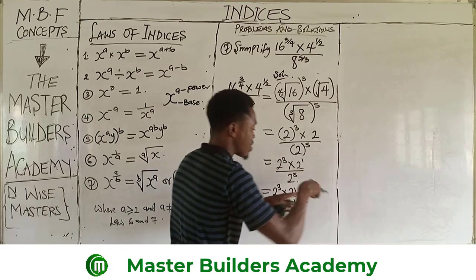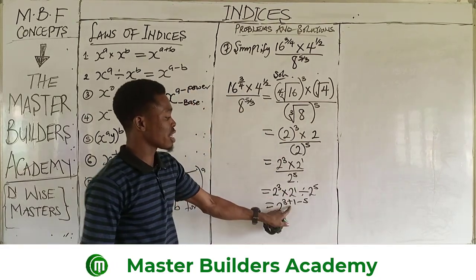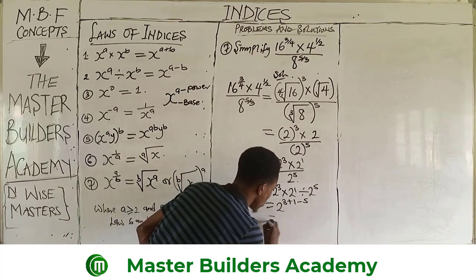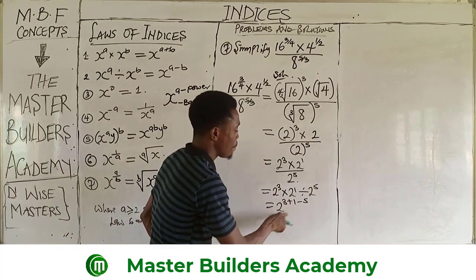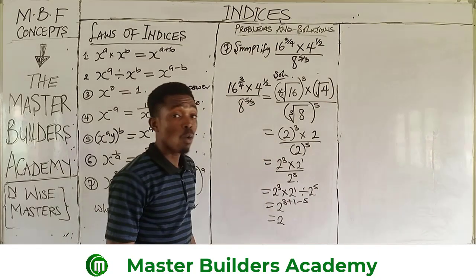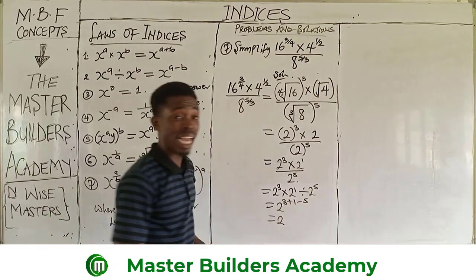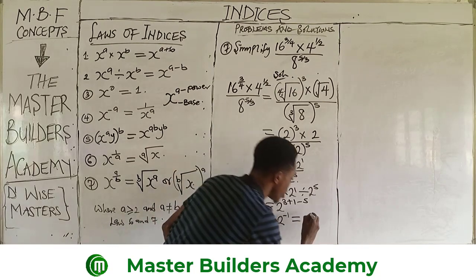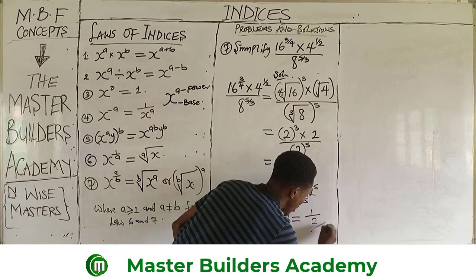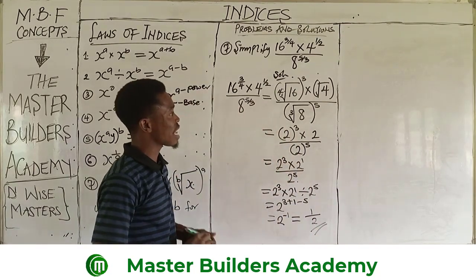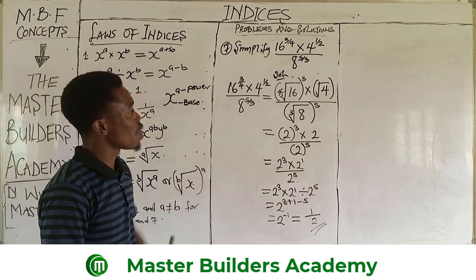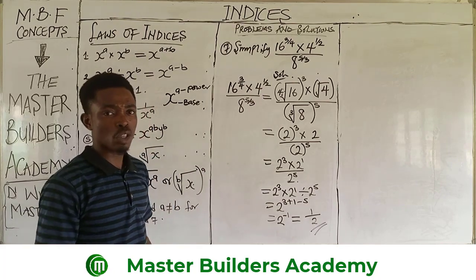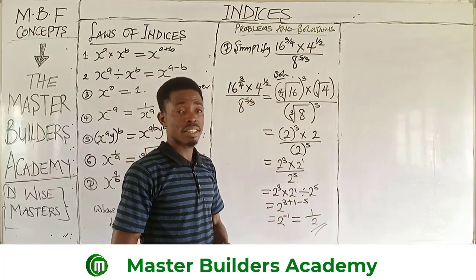Multiplication means addition and division means subtraction of powers. So this gives us 2 raised to the power of 3 plus 1, which is 4, and 4 minus 5 is negative 1. Using the fourth law of indices, a negative power means this becomes 1 over 2 raised to the power of 1 — and that is the answer to this question using this particular method.